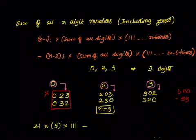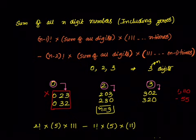Let us verify with the formula, where n equals 3. The formula gives: factorial 2 into (2 + 3 = 5) into 111, minus (n-2) factorial which is 1 factorial, into sum of digits 5, into 11 (that is n minus 1 = 2 times). That equals 10 into 111 minus 55, which matches our earlier answer.